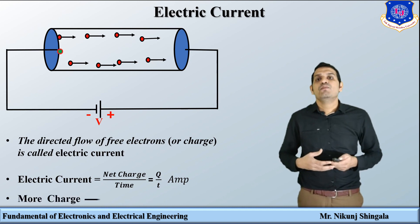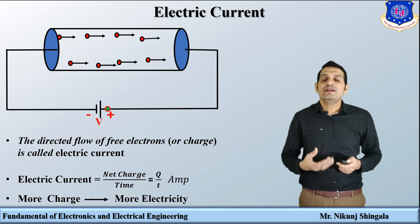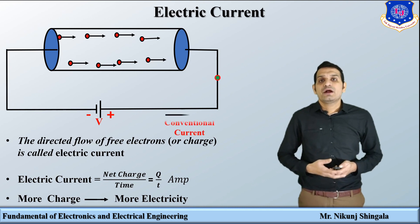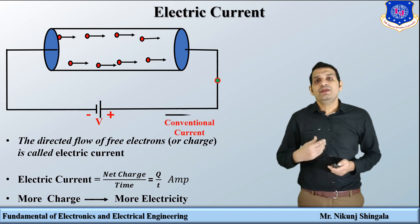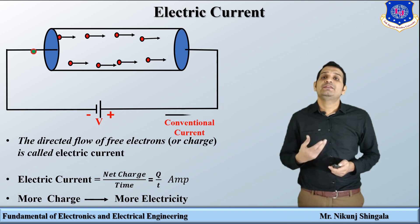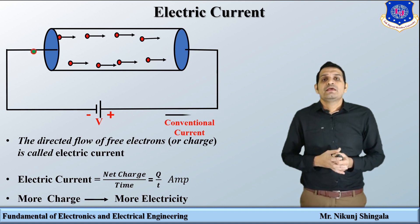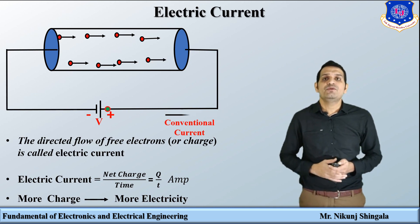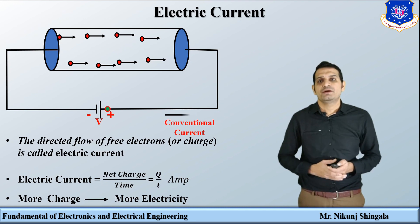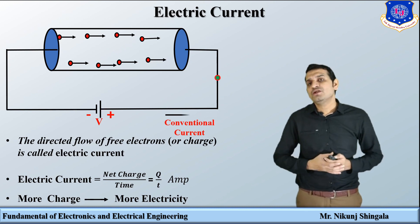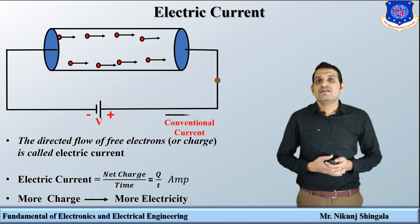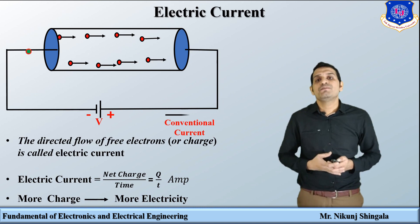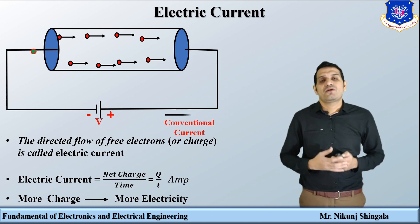More charge means more electricity. Before the development of modern electron theory, it was assumed that current flows from the positive terminal of the battery to the negative terminal — that is conventional current. In this subject, we will always consider the current flowing from the positive terminal to the negative terminal of the battery, that is conventional current. The definition of 1 ampere: 1 ampere is said to flow through a conductor if 1 Coulomb of charge flows in 1 second at any cross section.